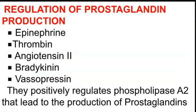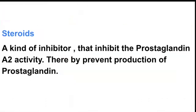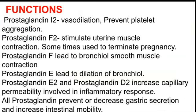Regarding regulation of prostaglandin production: epinephrine, thrombin, angiotensin II, bradykinin, and vasopressin positively regulate phospholipase A2, leading to increased production of prostaglandin. Steroids act as inhibitors that inhibit phospholipase A2 activity, thereby preventing the production of prostaglandin.